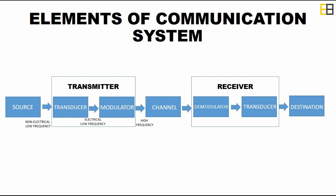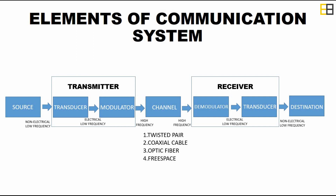Then the modulator energizes the low frequency signal to a high frequency signal and it is passed on to a channel by an antenna. There are four types of channel: twisted pair, coaxial cable, optic fiber, and free space. The signal is then captured at the receiver side, and the demodulator converts the high frequency signal to a low frequency signal. This electrical low frequency signal is then passed on to a transducer.